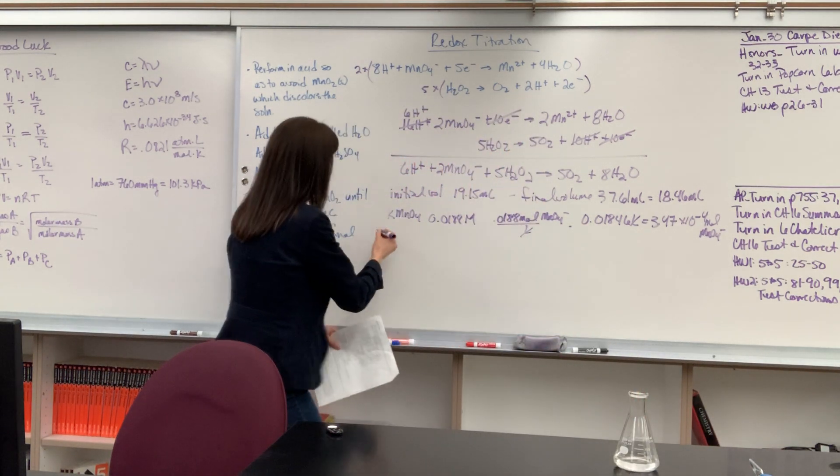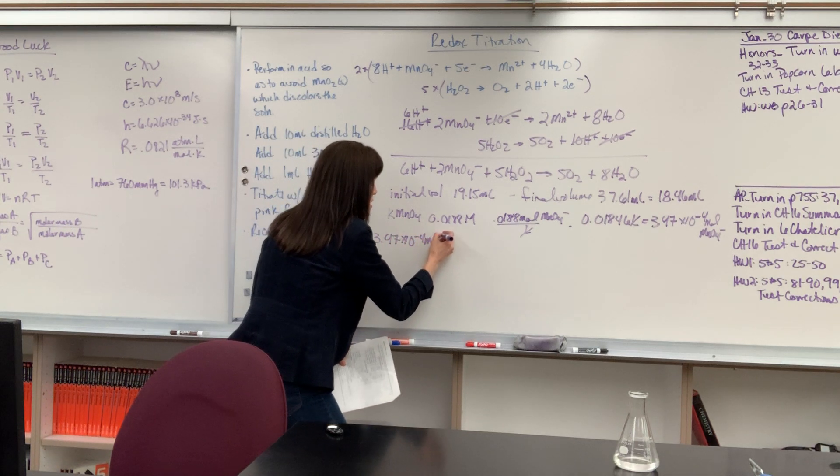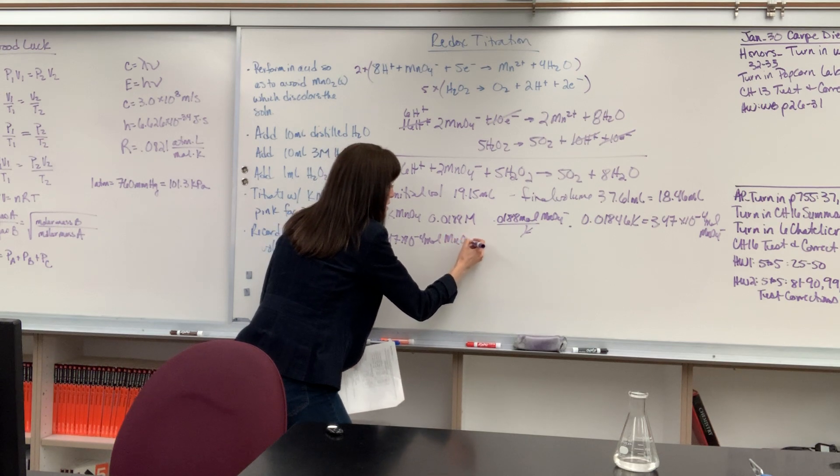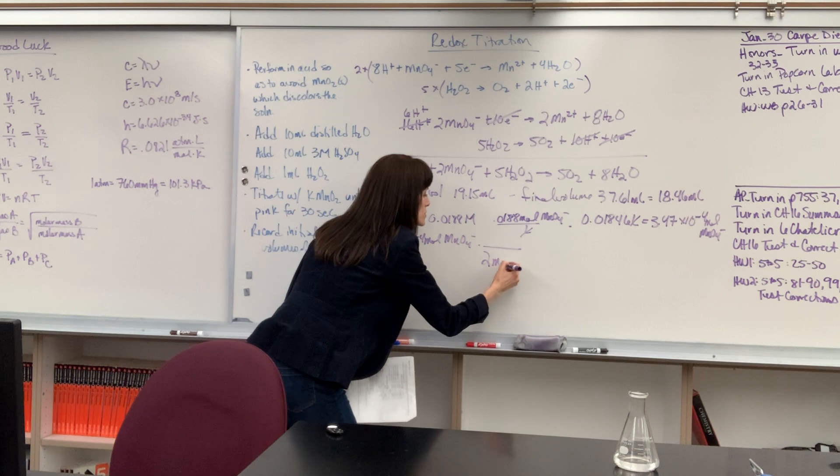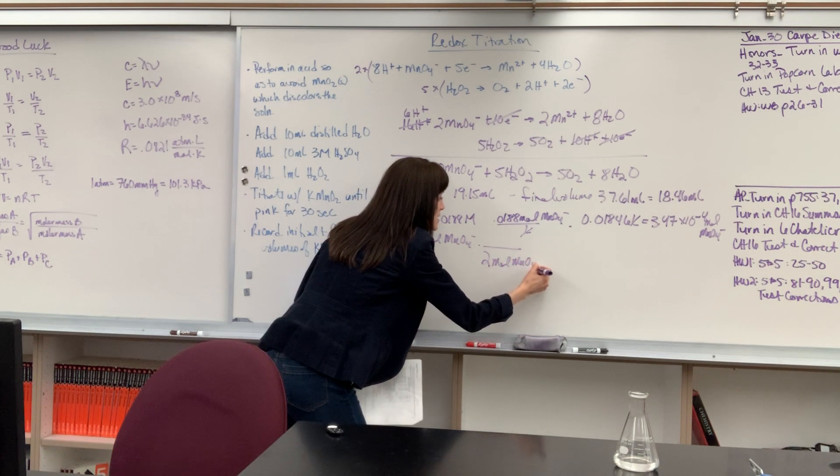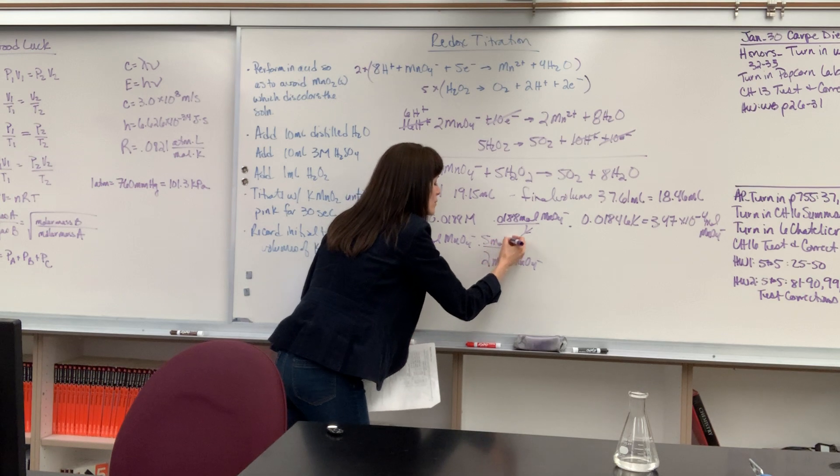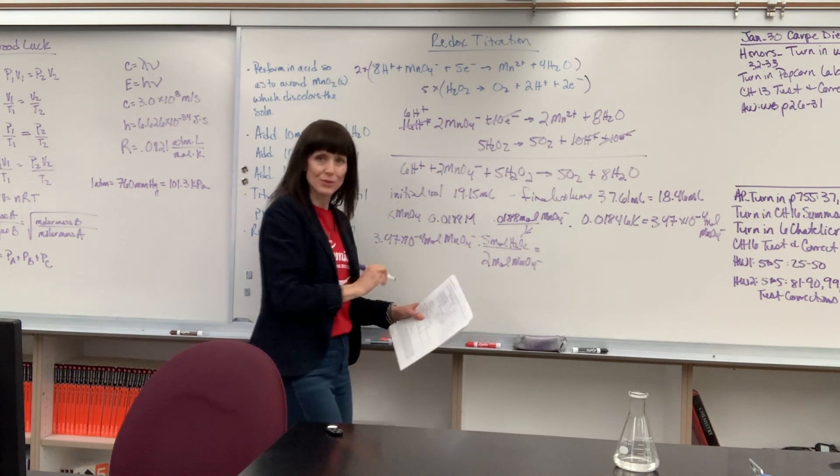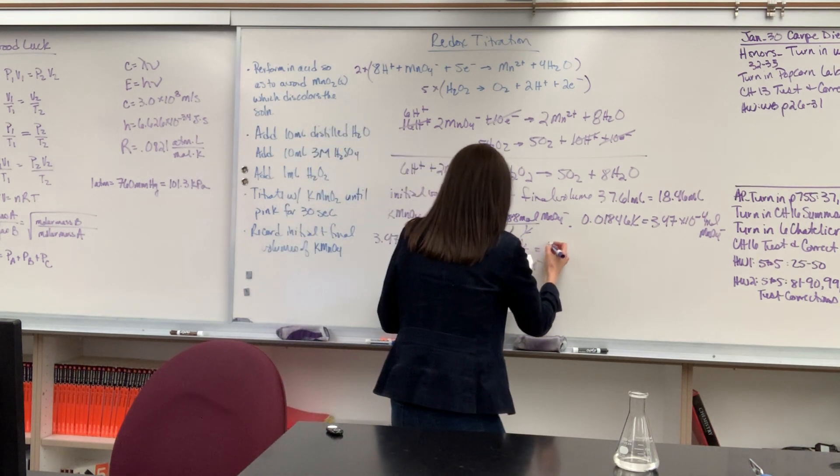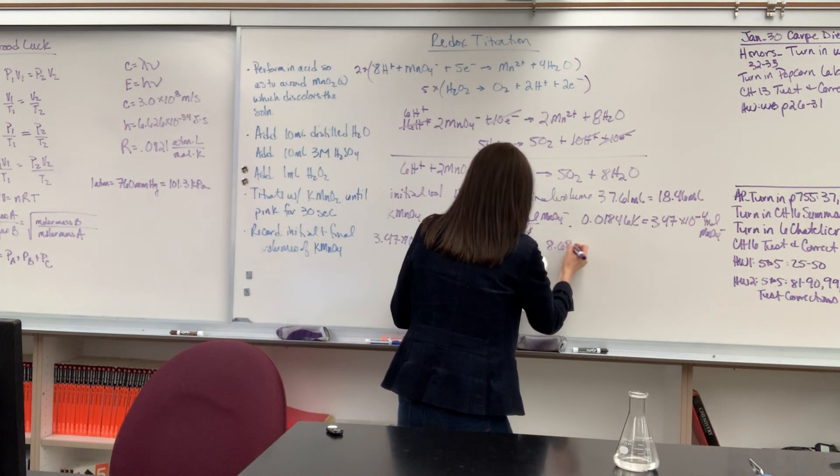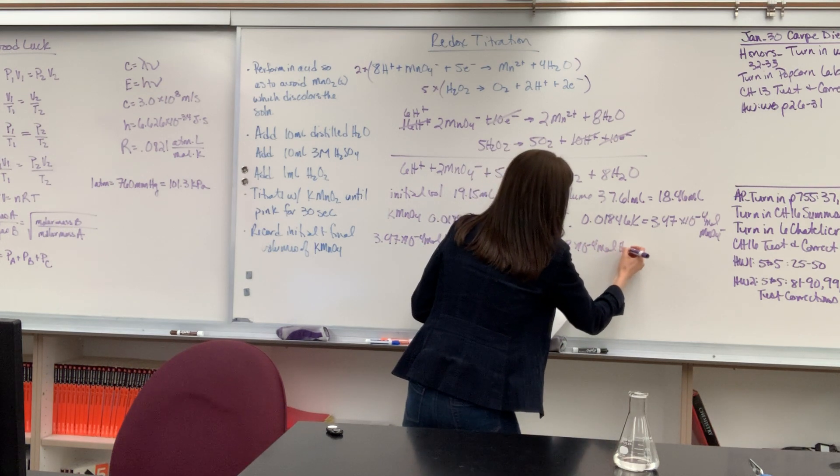I love it. Pretty simple. If we have 3.47 times 10 to the minus 4 moles of the permanganate, well, the ratio is for every 2 moles of permanganate, it is going to react with 5 moles of hydrogen peroxide. So do this math, and we get the exact moles of hydrogen peroxide: 8.68 times 10 to the minus 4 moles of hydrogen peroxide.